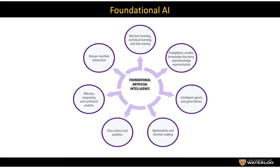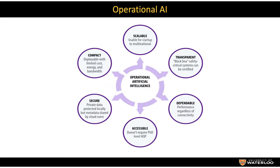There are two major areas of AI. Foundational AI consists of machine learning, probabilistic models, intelligent agents, data science and analytics, and human-machine interactions — these are the core technologies of AI. On the other side is operational AI, which is mostly the application of AI to various industries. These operational AI tools are dependable, accessible, secure, compact, and transparent — powering what we call today AI and machine learning.